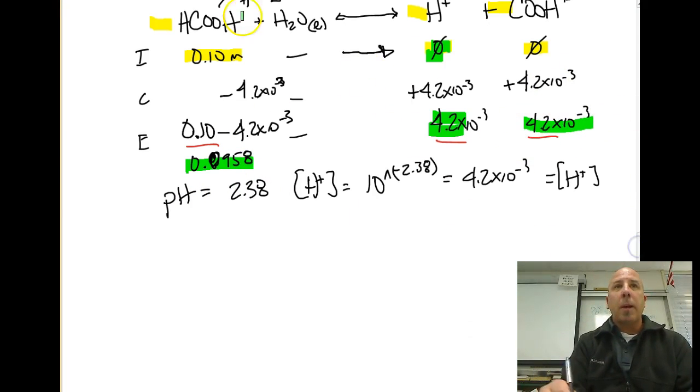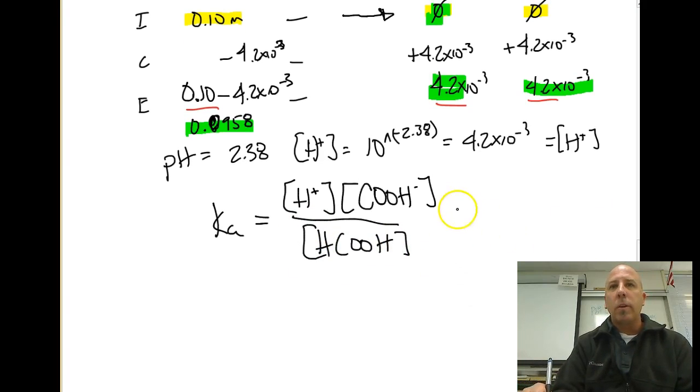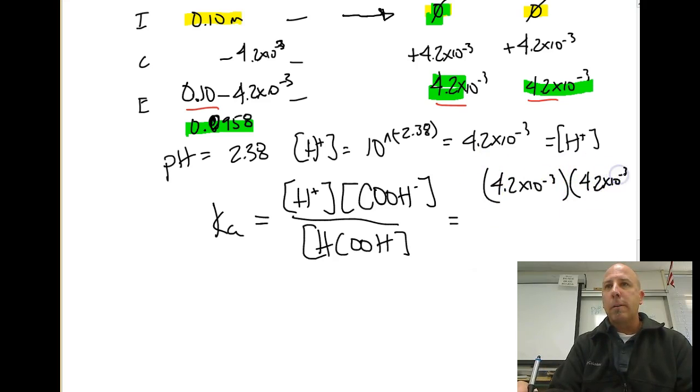So, now what I can do to set up my Ka expression is Ka equals the hydrogen ion concentration at equilibrium, multiplied by our formate ion concentration at equilibrium, divided by our formic acid at equilibrium. So, let's go ahead and plug those values in from our E line on our ICE table. So, we have 4.2 times 10 to the negative third, times 4.2 times 10 to the negative third, and then we're going to divide that by 0.0958.